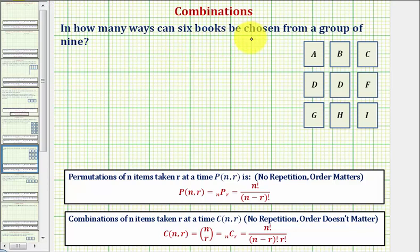And how many ways can six books be chosen from a group of nine? So in a situation like this where we have n items taken at a time, or in this case nine items taken six at a time, our first question is does the order matter?